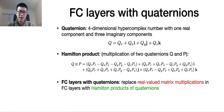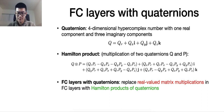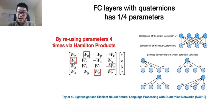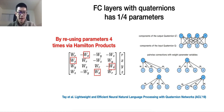For context, a Quaternion is a four-dimensional hyper-complex number, and the multiplication of two Quaternions is called the Hamilton product. The so-called FC layers with Quaternions replace the real-valued matrix multiplications in the FC layers with the Hamilton products of Quaternions. Note that FC layers with Quaternions have only one-quarter of the parameters in comparison with their FC layer counterpart, because this Quaternion trick can reuse the parameters four times via the Hamilton products.